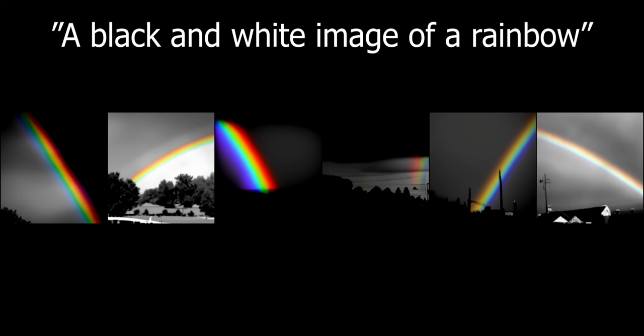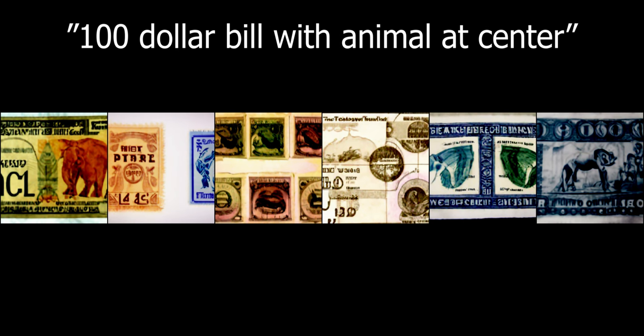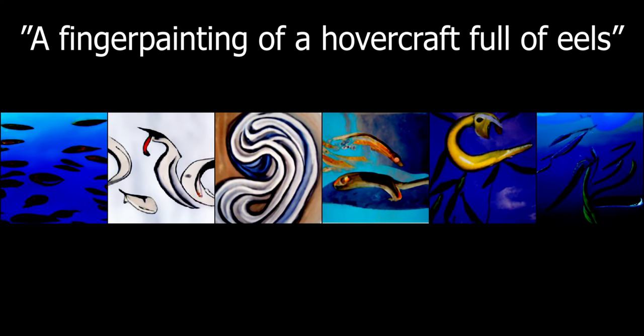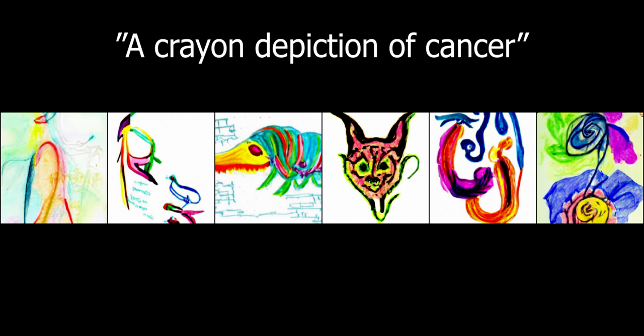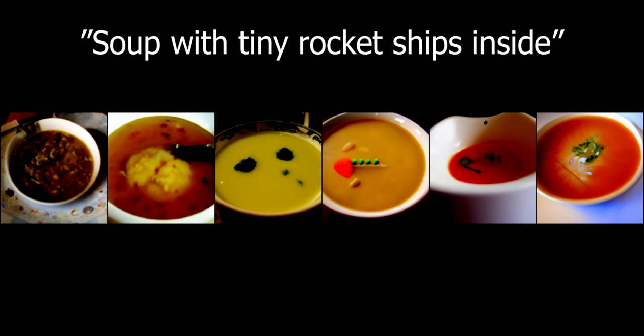This one I think the model actually outdid me — I was hoping for a rainbow where just the rainbow itself was black and white, but it created images where the left and right sides were black and white. '$100 bill with animal at center' — I feel like the original model could have done better, but it absolutely provided what I wanted, maybe stamps too. A finger painting of a hovercraft full of eels — not all of them are finger paintings, not all of them are hovercrafts, but it looks like a hovercraft-eel hybrid. Mad points.